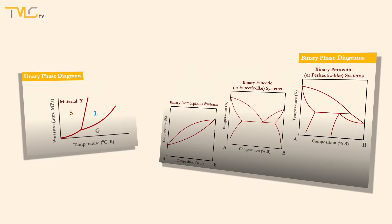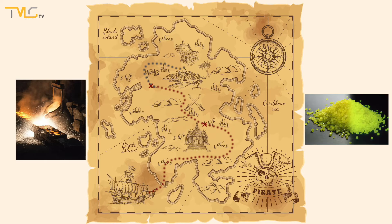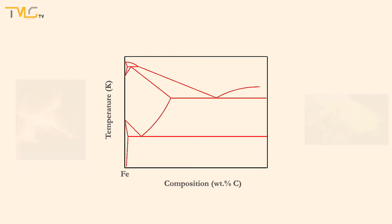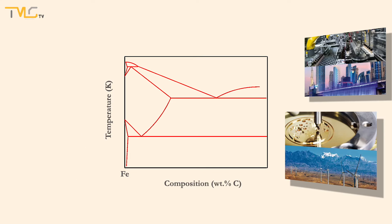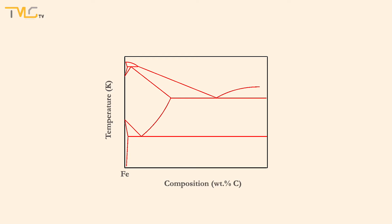Hello all. We have covered unary and binary phase diagrams in the last two videos. On the last leg of our journey, we will discuss one of the most fundamental systems in metallurgy and materials science: the iron-carbon binary system. This subject covers two materials commonly used in many industrial applications and academic research — steel and cast iron. There are many solid phases in the iron-carbon binary system.